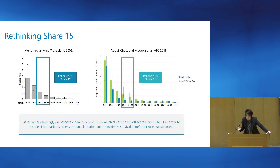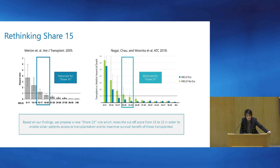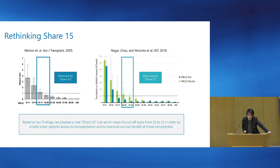When we compare the findings of the Marion study to what we found here, the rationale for SHARE 15 is no longer as clear. We can see that you don't see a survival benefit until a MELD score above 21. Based on our findings, we propose that instead of a SHARE 15 rule, we should consider using SHARE 21 — raising the cutoff from 15 to 21 — to enable greater access to transplantation and to ensure an actual survival benefit for patients.